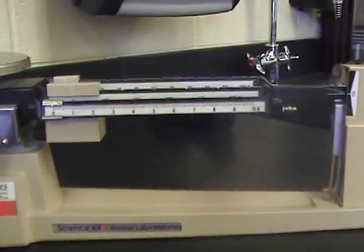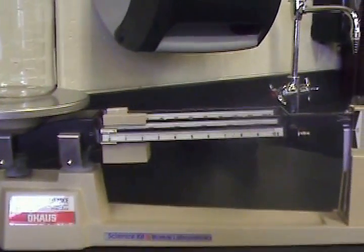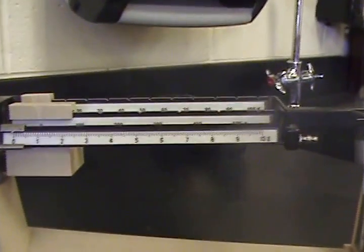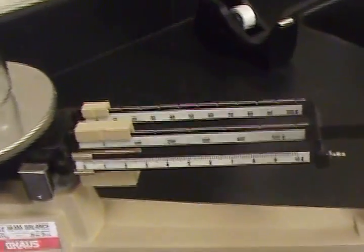Now, take your object carefully, set it in the middle of the pan, and it's time to record our mass. First thing you want to do is move the center riser. It's the largest one. That's the one you want to start with.